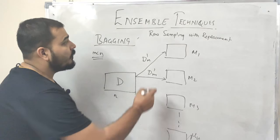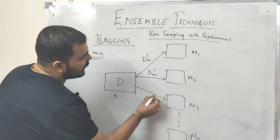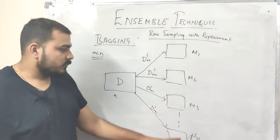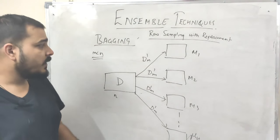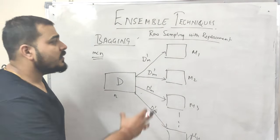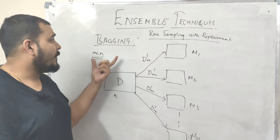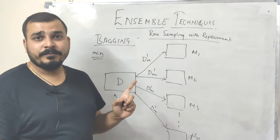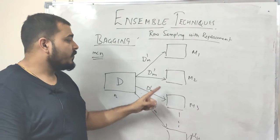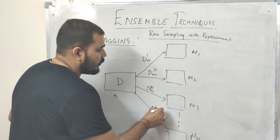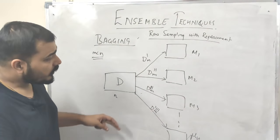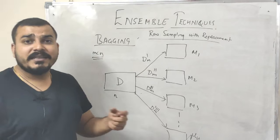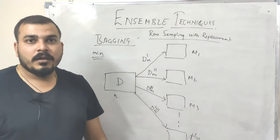For my third model I'll be giving another set of D-dash, and for my nth model that will be another sampled set of row data from this dataset. Once we give this data to our models — and in bagging I'm using a group of models, so let it be any base learning model — each model will get trained on its particular sample of data. All models get trained simultaneously with their sampled data.